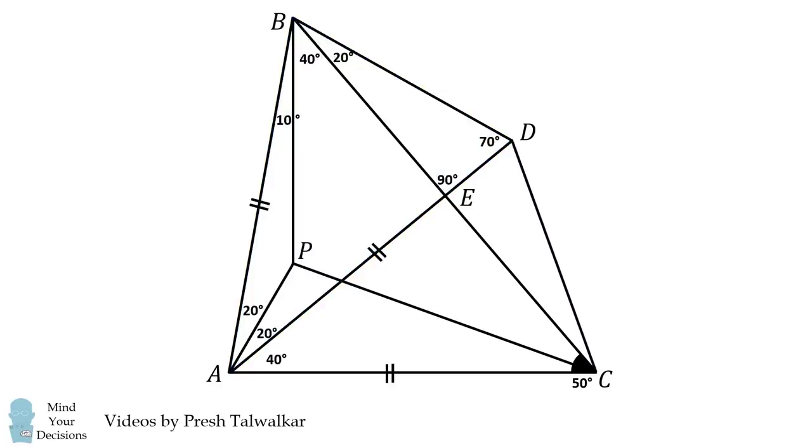We will now construct DC. ADC is exactly congruent to ABD. Therefore, we will have a 70 degree angle here, we'll have a 20 degree angle here, and we will have that DC and DB are equal to each other.